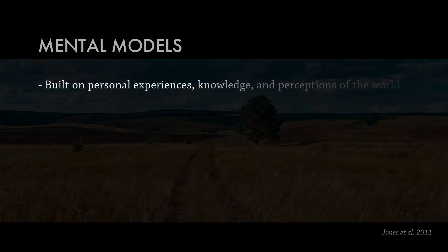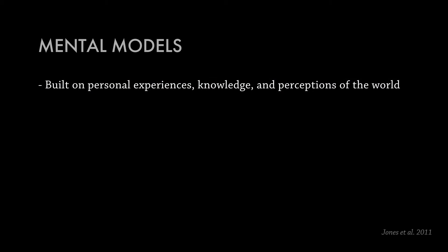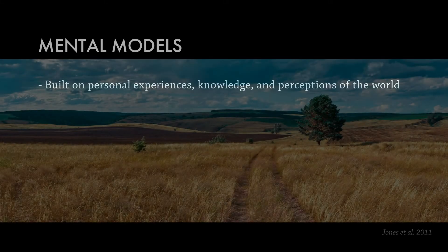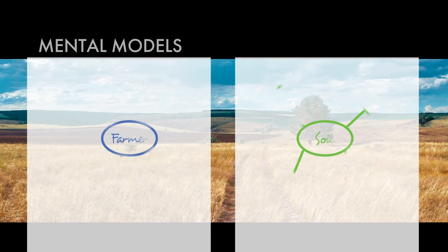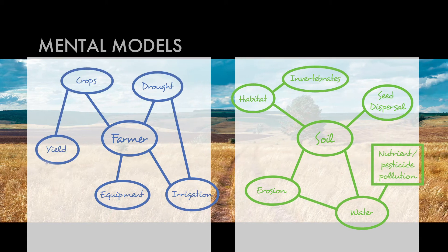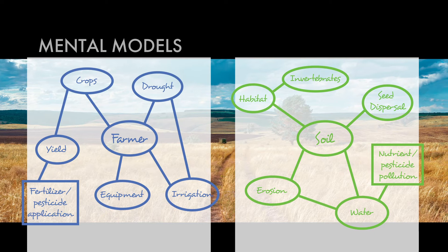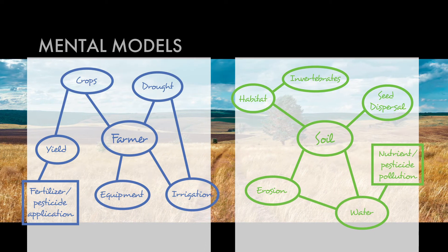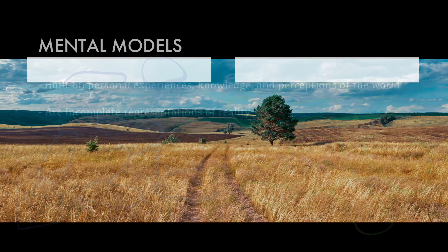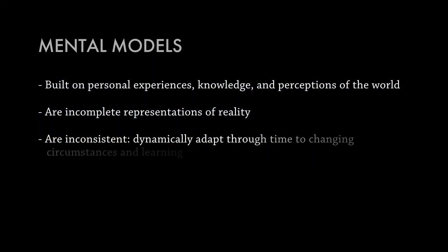Mental models are built on personal experiences through a lifetime, and they're based on your knowledge — directly related to knowledge gained through formal education, informal experiences, and your perceptions of the world. If you take two different scientists and they look out on the same landscape, they're going to notice different things depending on what discipline they're in and what mental models they've built through time. Mental models are incomplete representations of reality, and they're subject to change — they are inconsistent through time, and that's a good thing, because we want our mental models to dynamically adapt as we learn new things.